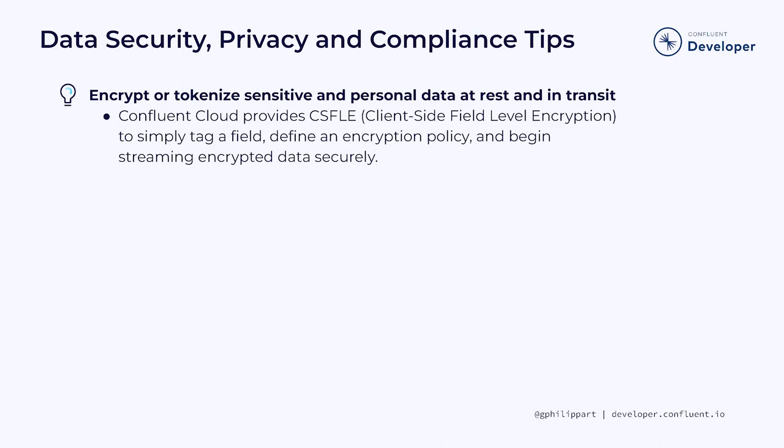First, it's important to encrypt or tokenize PII data, both at rest and in transit. This ensures that any sensitive information is unreadable to anyone who does not have access to the encryption keys. Confluent Cloud provides client-side field-level encryption — simply tag a field, define an encryption policy, and begin streaming encrypted data securely.